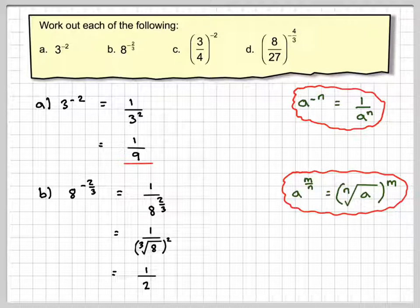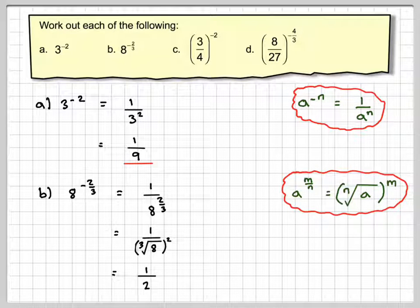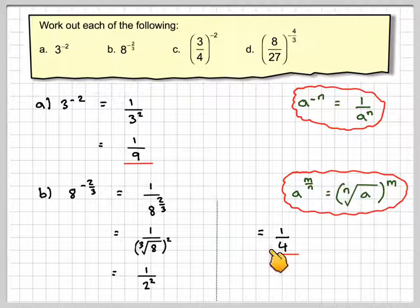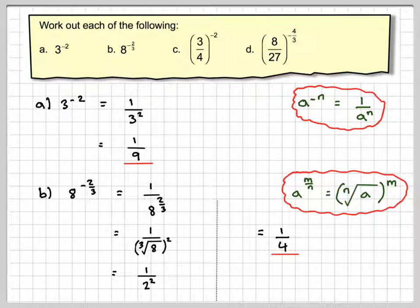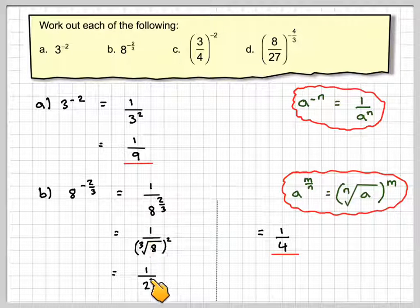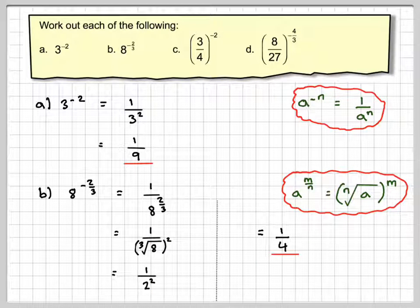So that becomes the cube root of 8, and then we have to square the result. So the cube root of 8 is 1 over 2, and we need to square that, and that gives me 1 over 4 as the final answer. So you need to make sure you do these in stage by stage, not try to do too much in one go.